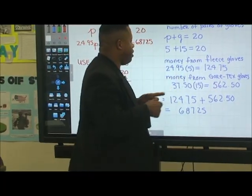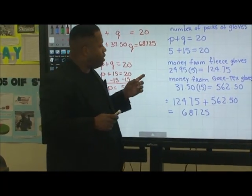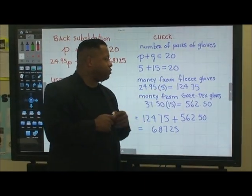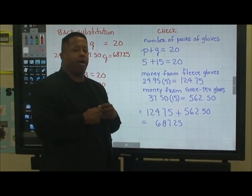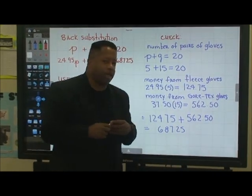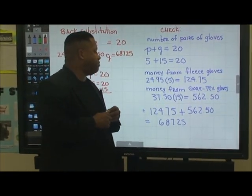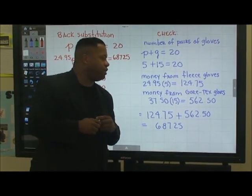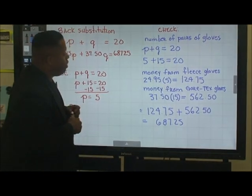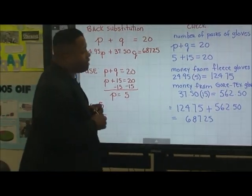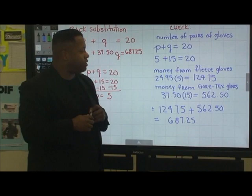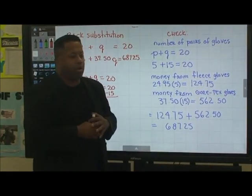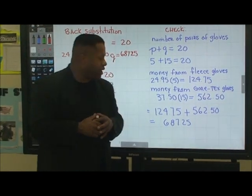Now let's talk about the money. Now for fleece, we have 24.95 times 5 is equal to 124.75. And also money from Gore-Tex gloves, we got 37.50 times 15 is equal to 562.50. So when we add those together, we did pick up a total amount of $687.25.